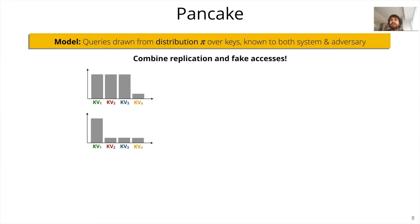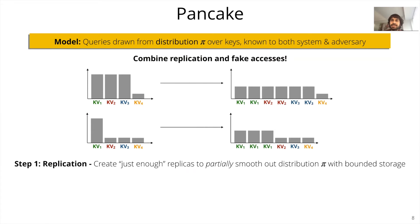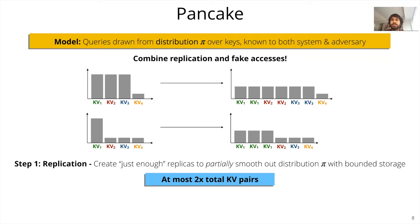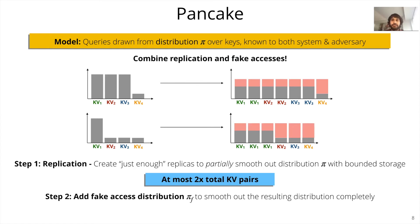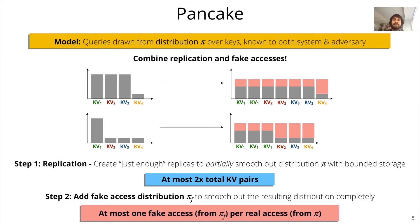The key idea in Pancake is to combine replication and fake accesses to bound both bandwidth and storage overheads. The first step is to use replication, where we create just enough replicas for each key-value pair to partially smooth out the access distribution with bounded storage overheads. Our replication scheme ensures that storage increases by at most a factor of two. Since the resulting distribution is not completely uniform, we then add a fake access distribution pi_f across the new set of key-value pairs to smooth it out completely. Our combination ensures that at most one fake access from pi_f needs to be drawn for every real access from pi to ensure a completely uniform final access distribution.